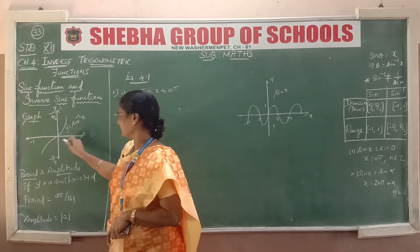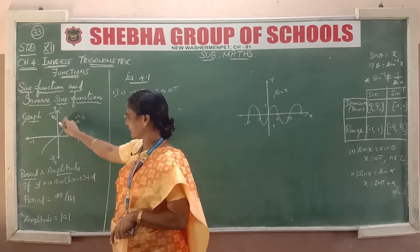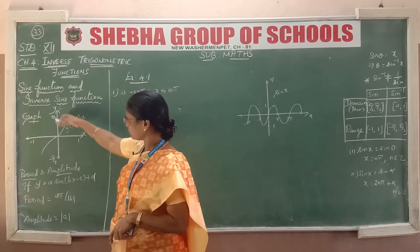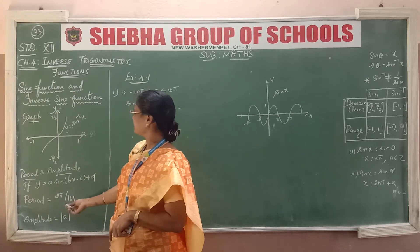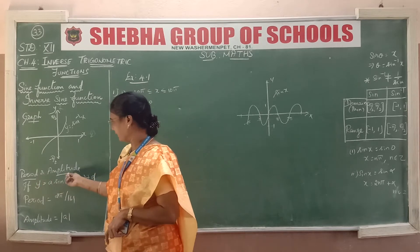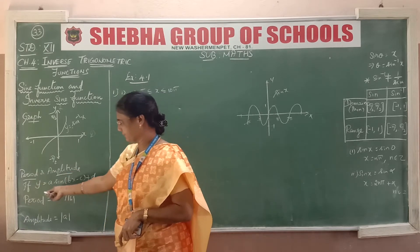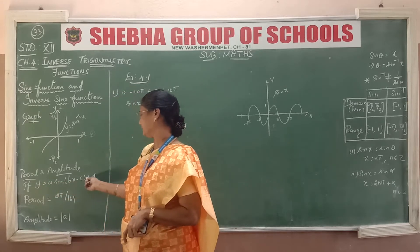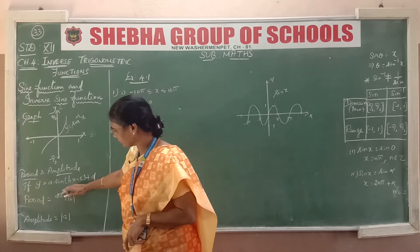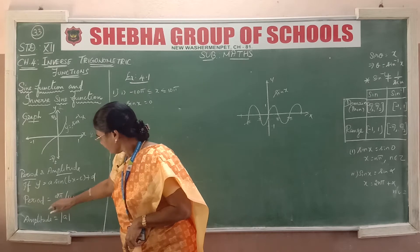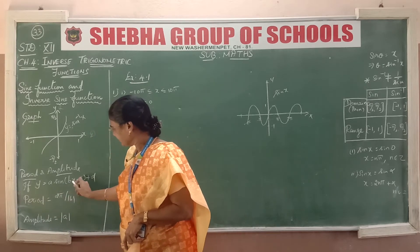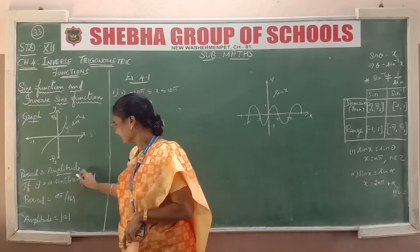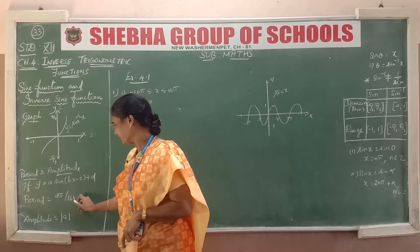If you look at the domain, the range is from -π/2 to +π/2. Next, period and amplitude are defined in the sine function. Suppose y = a·sin(bx - c) + d. The period is 2π divided by the coefficient of x, that is, the absolute value of b.